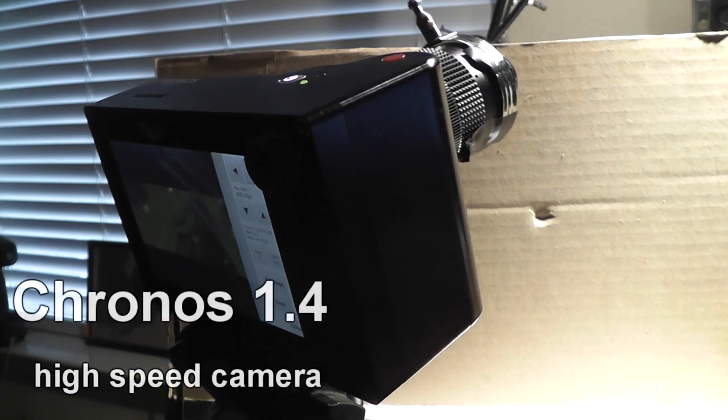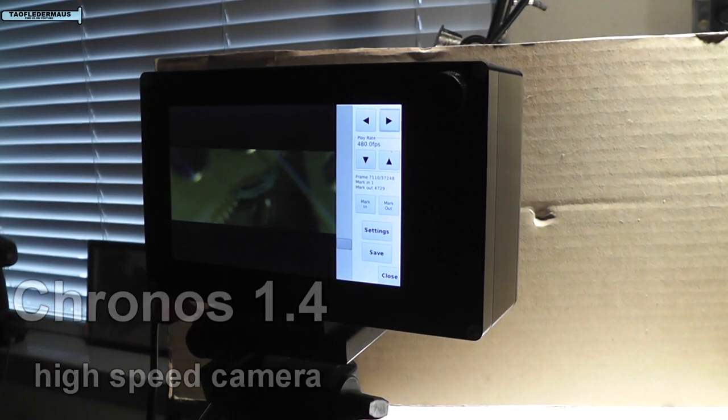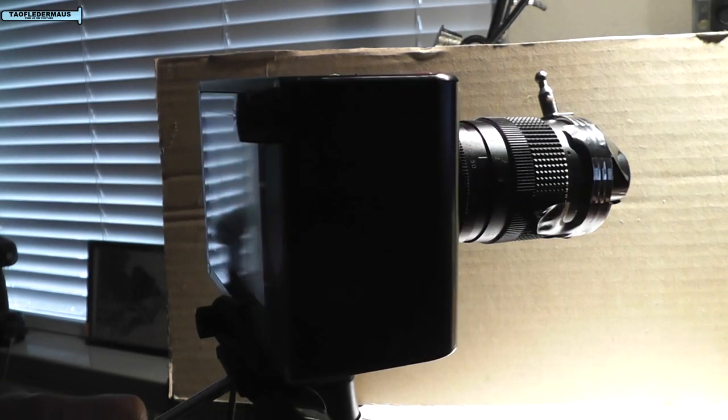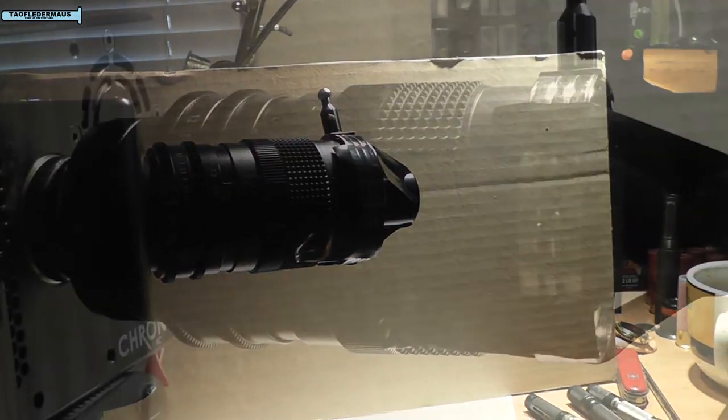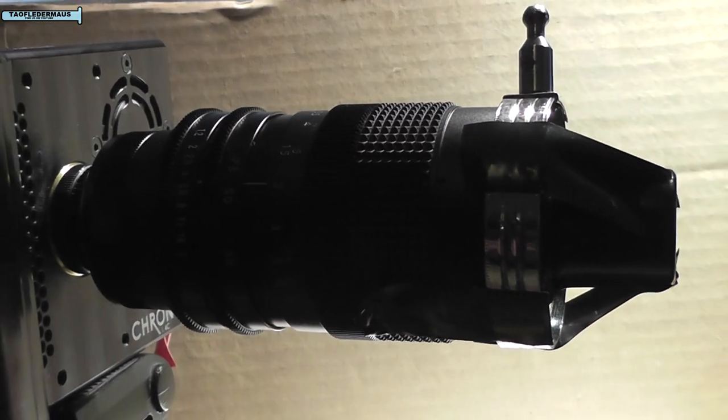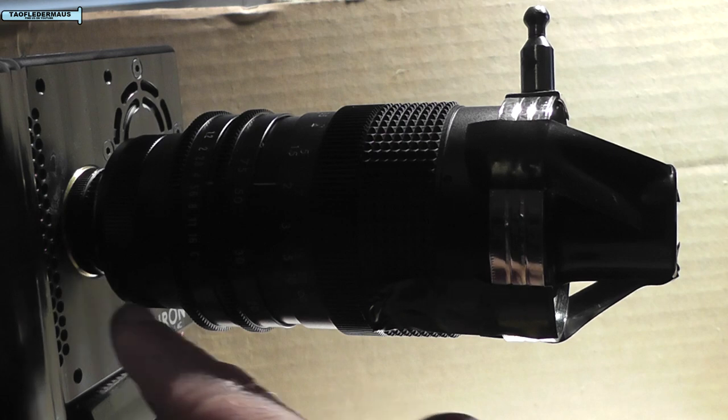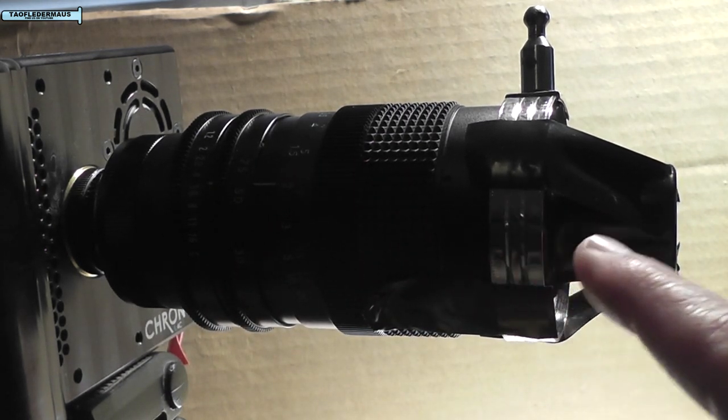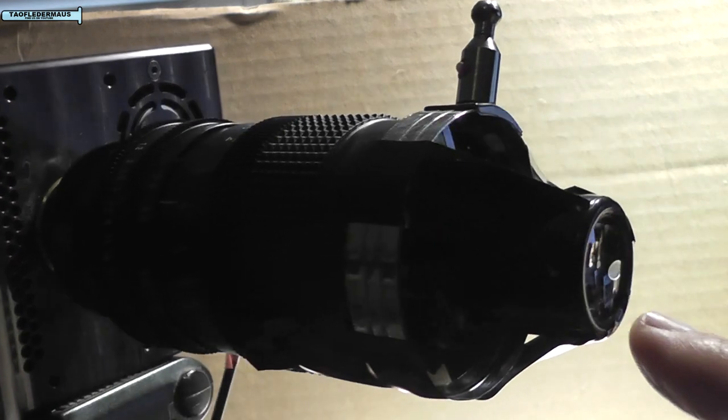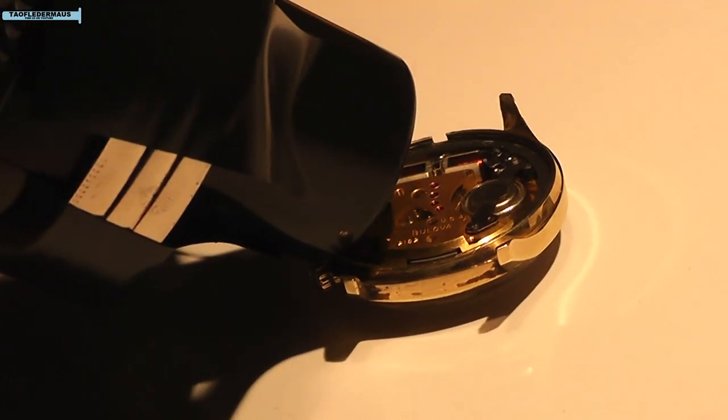I crudely modified the Kronos 1.4 high-speed camera into a makeshift microscope. It's actually laughable how I did this but it works. I taped a magnifying glass on the end of the lens and then taped a five power eye loop on the end of that. I also used a five millimeter macro ring between the lens and the camera body. And as you can see all filming was done at a very close distance.